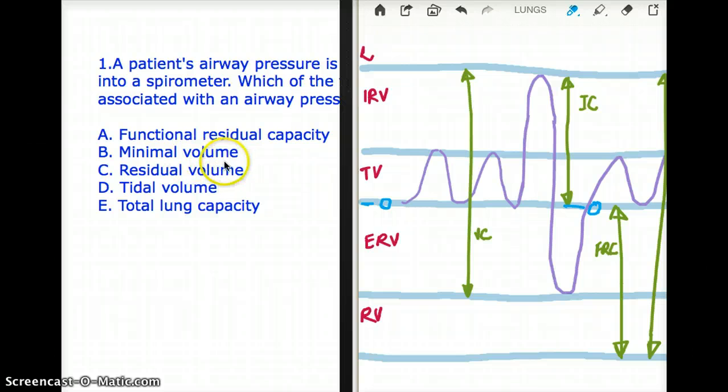Minimal volume is the volume left in your lungs after your lungs have been completely deflated. A tiny bit of volume is left in your lungs which you cannot get rid of, in the nooks and crannies of your lungs they're just hidden there. So that's minimal volume. That's only in a lung that has been cut out.